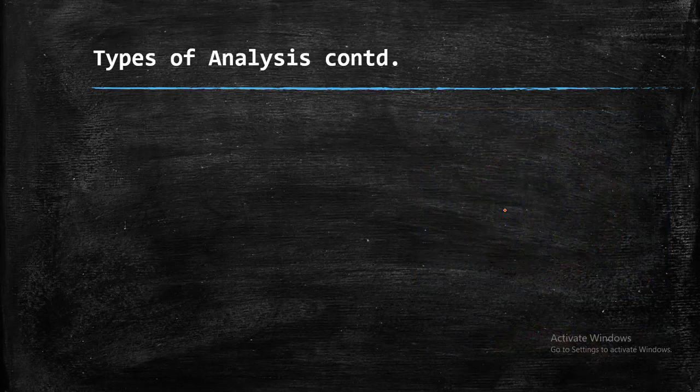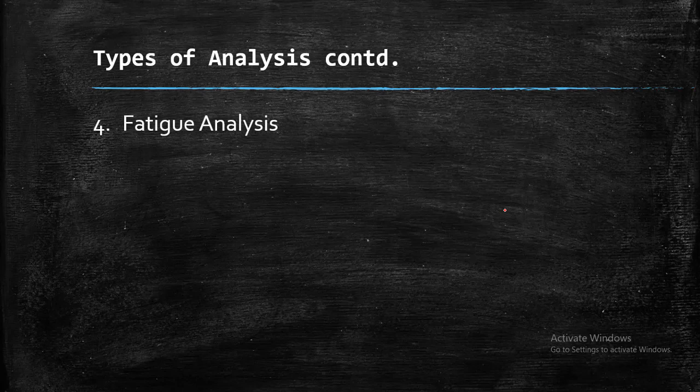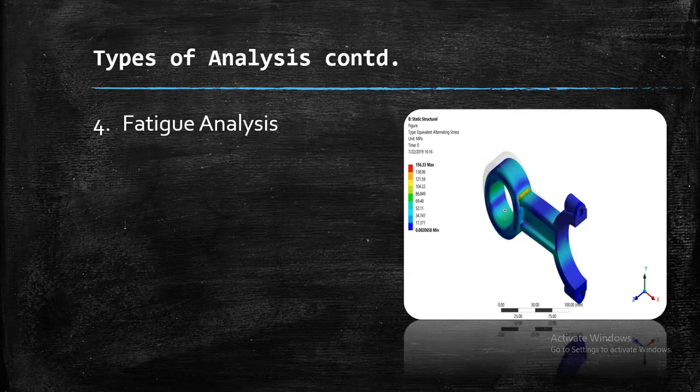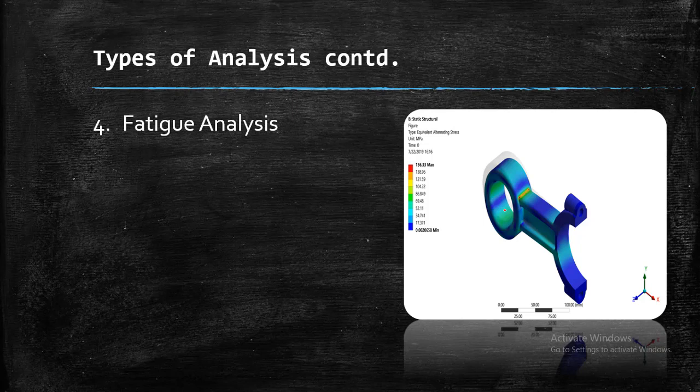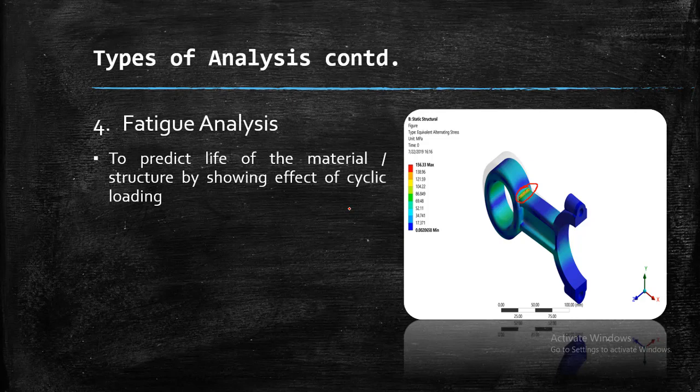Now moving on, that is fourth, fatigue analysis. You can see this is a connecting rod. Connecting rod is a dynamic component. So there will be some continuous loading occurring on that, the cyclic loading will be occurring. So because of that fatigue stresses are occurring and there is a possibility, you can see at the neck area, the red region here, if it exceeds this permissible stress limit, the failure will be at this point. So for that we need fatigue analysis to predict the life of material or structure by showing the effect of cyclic loading. So for that we need fatigue analysis.